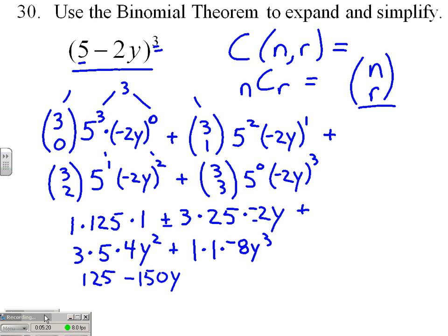Next term: 3 times 5 times 4, or 15 times 4, plus 60y². And our final term: 1 times 1 times -8, so minus 8y³.